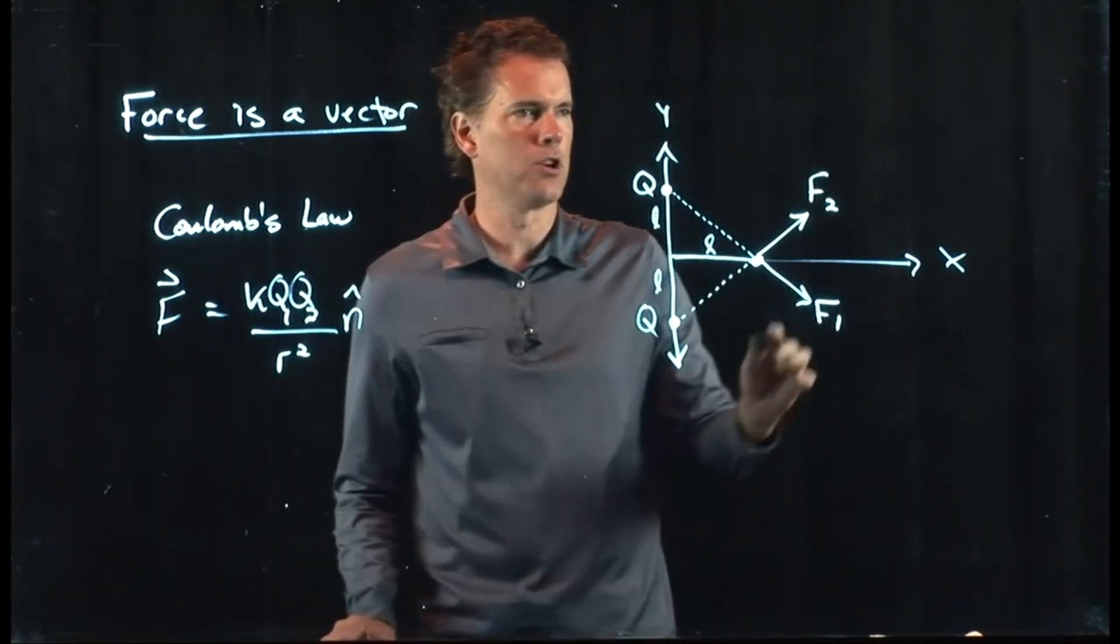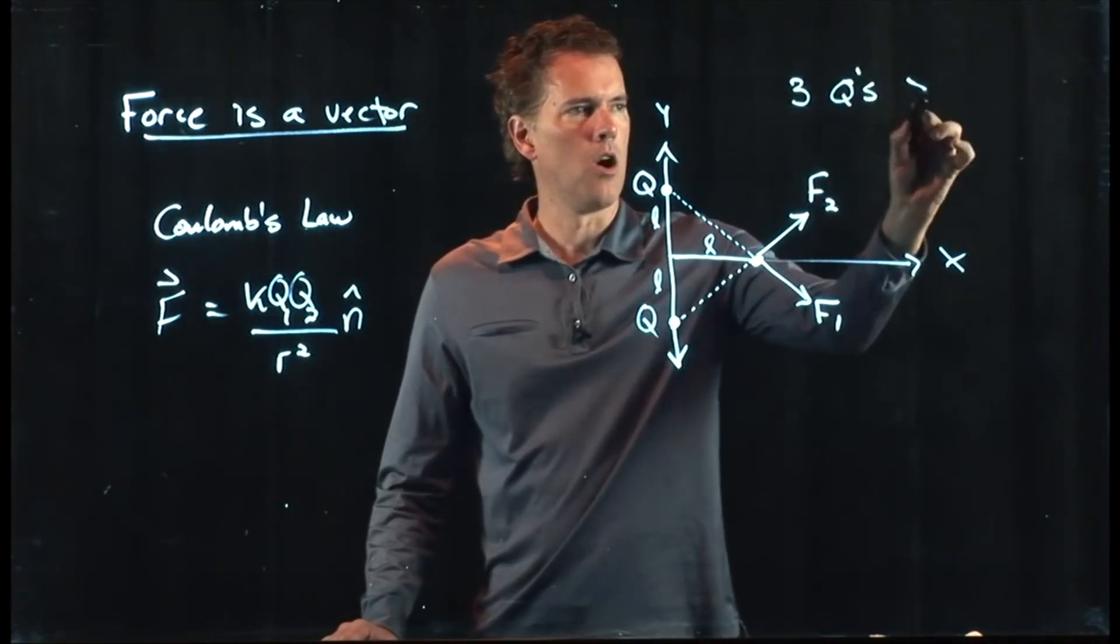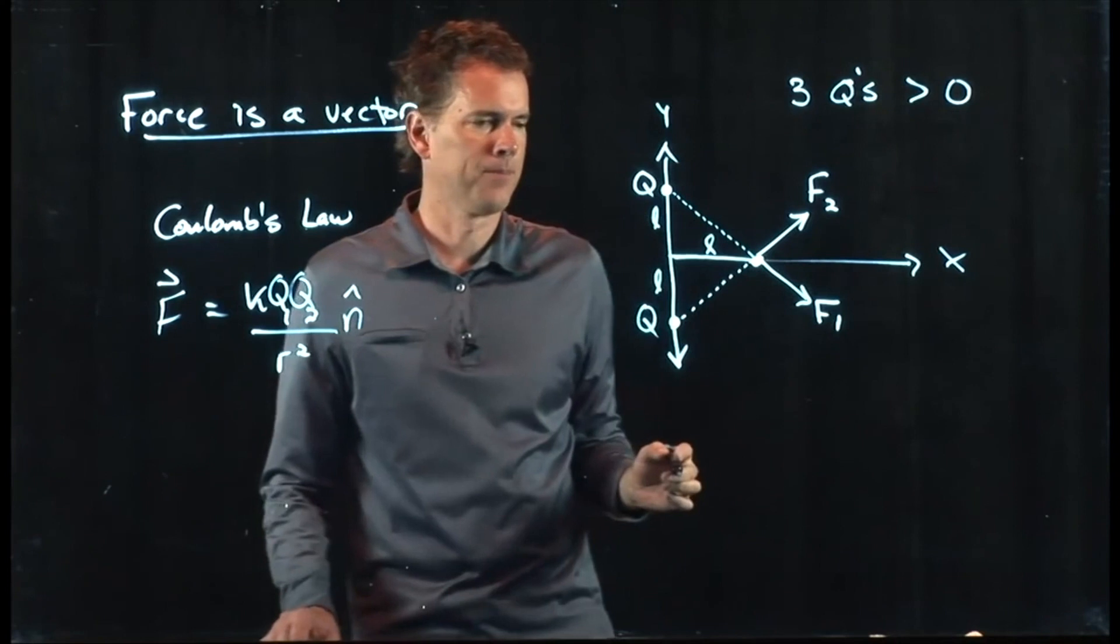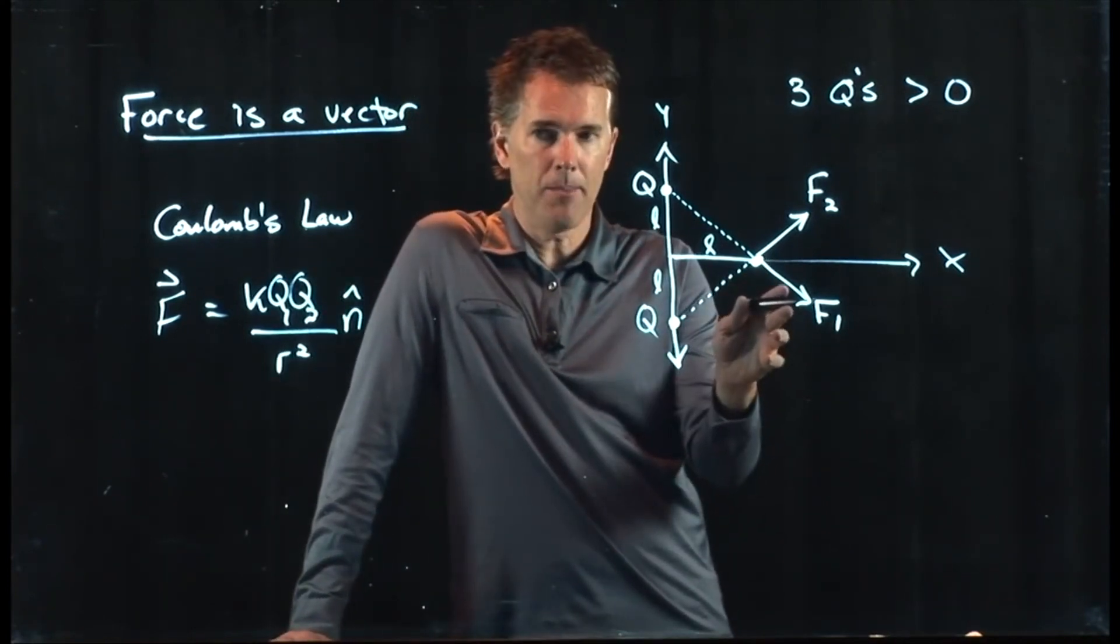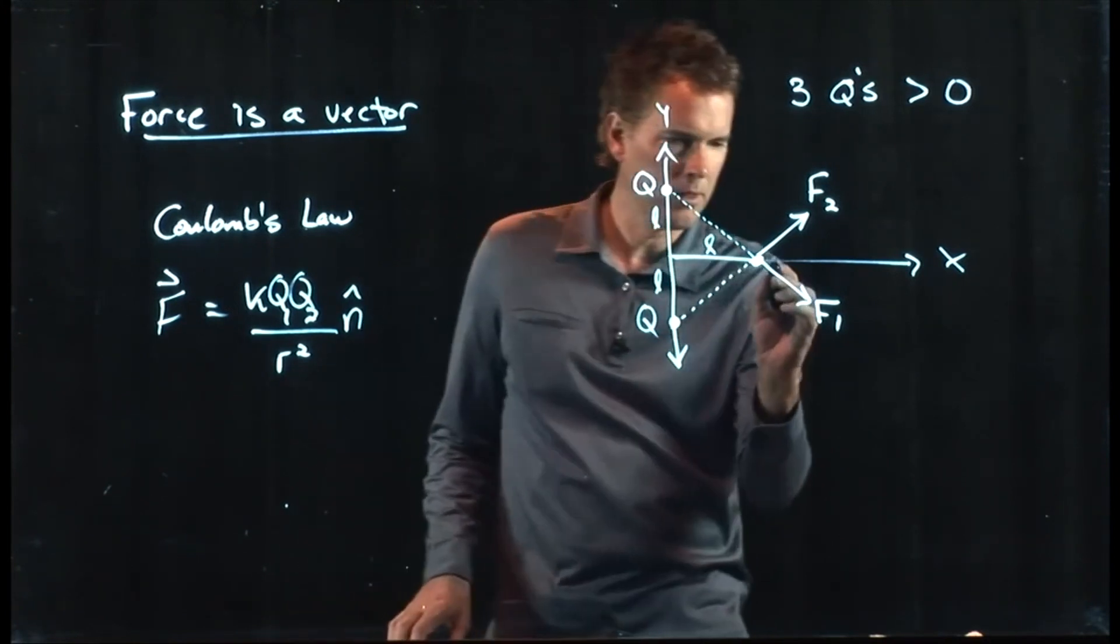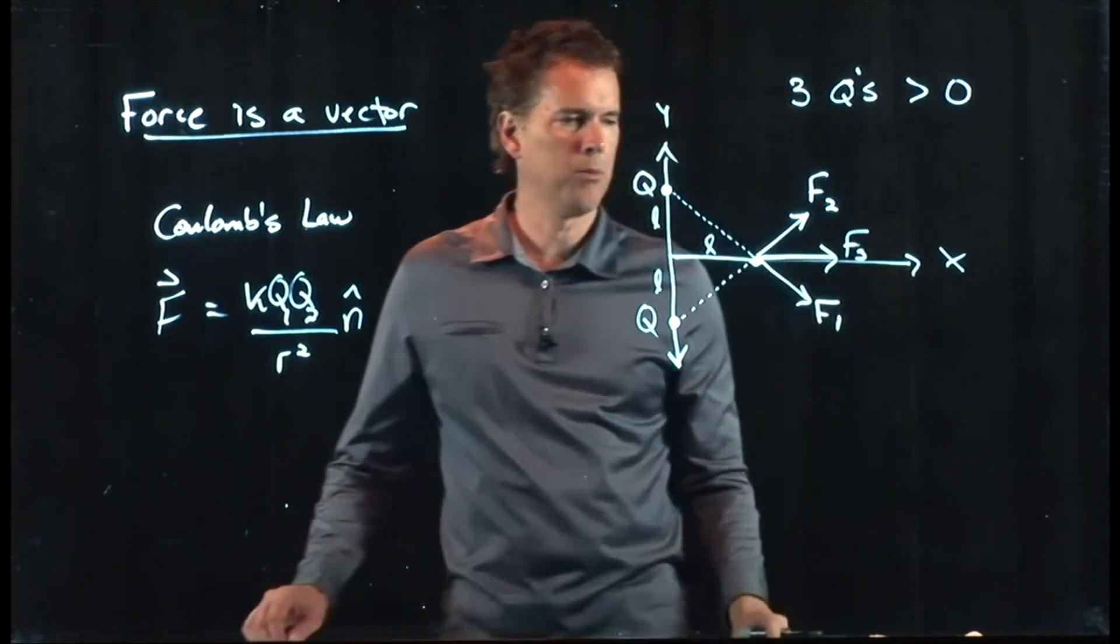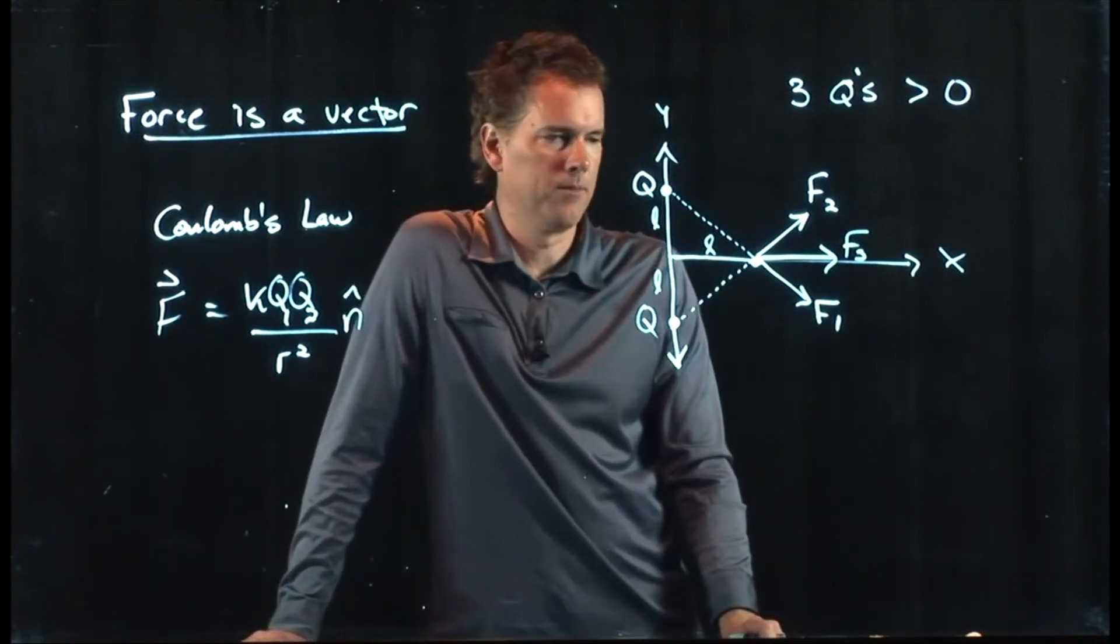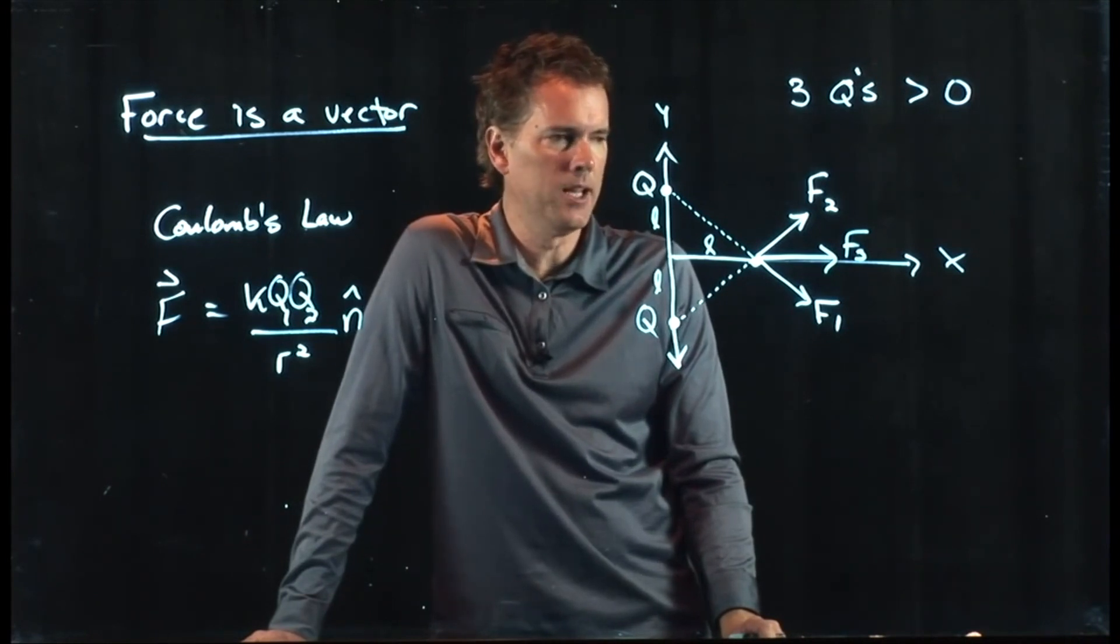Let's just pretend they're all positive charges. Three Qs, all of them greater than zero. So now we just have to add up F1 and F2. And you know what's going to happen. They're going to add up to some F3 that is off in that direction. Let's see if we can calculate what F3 is.